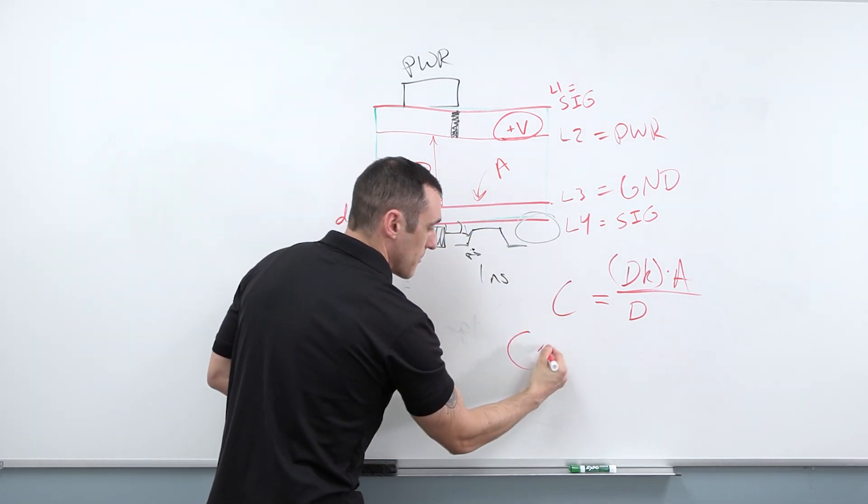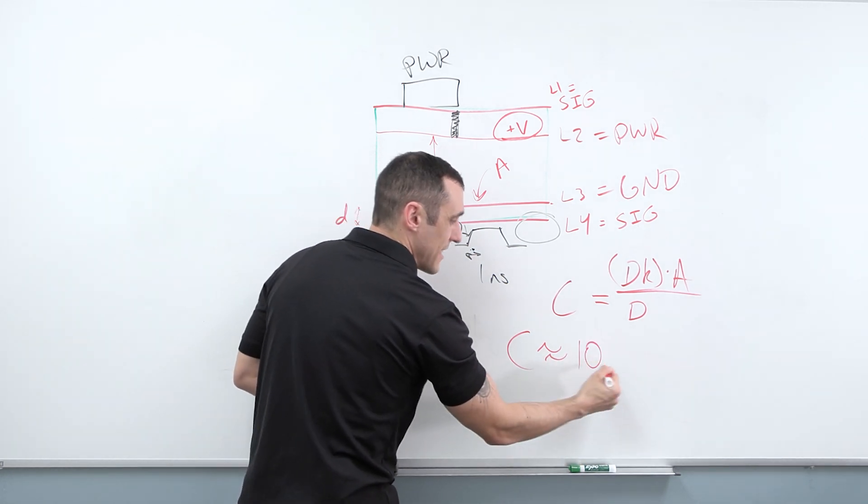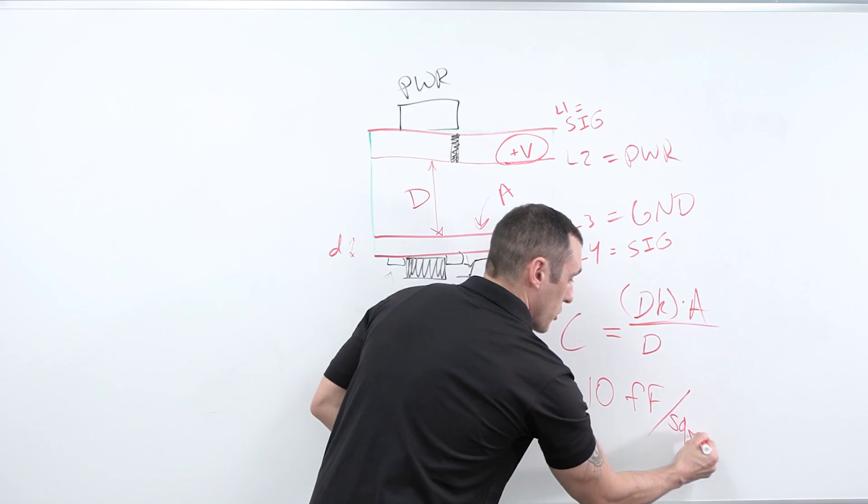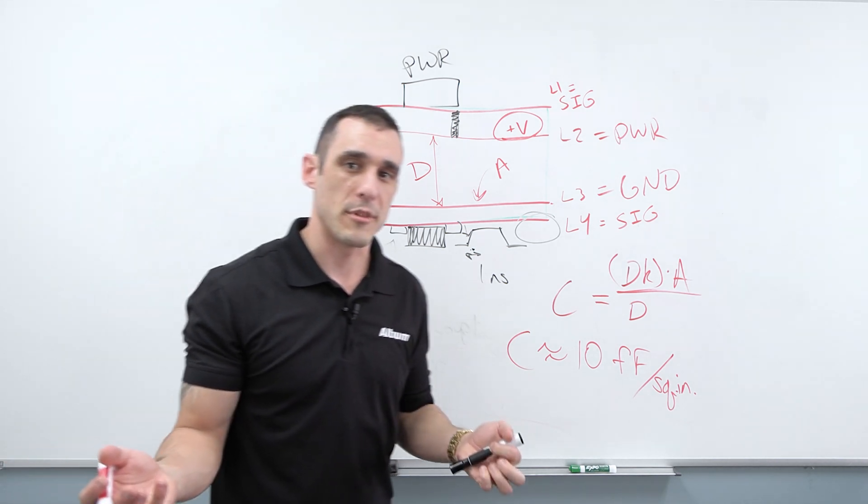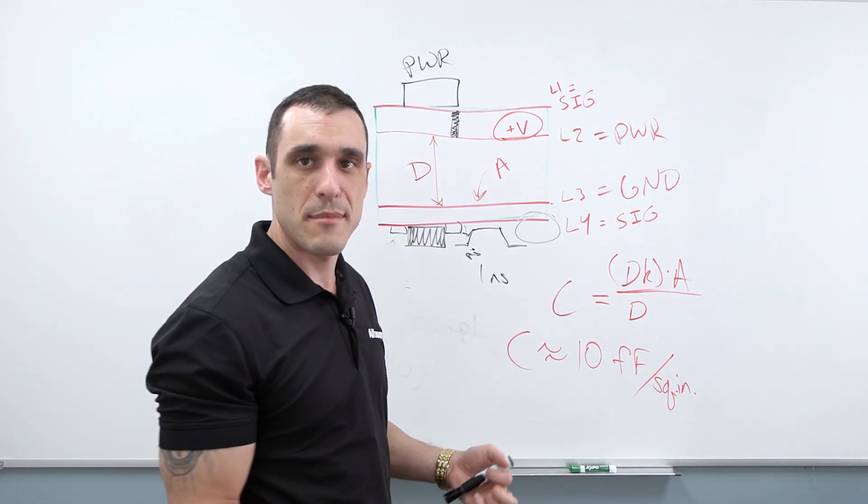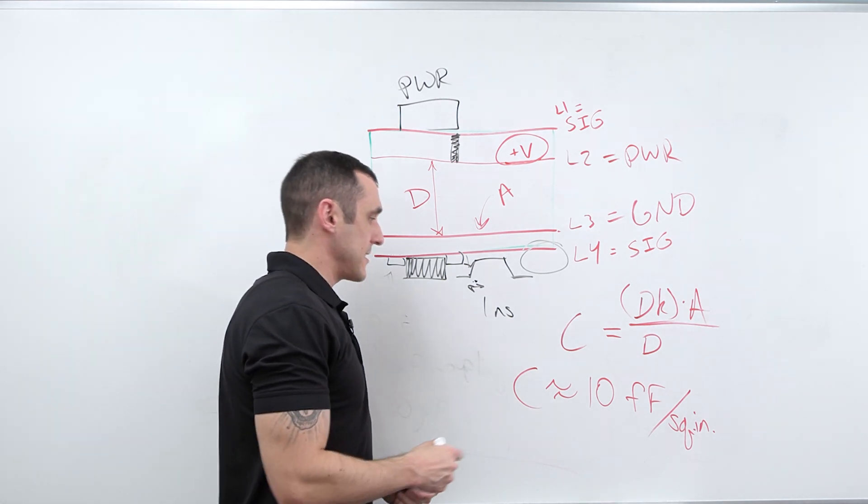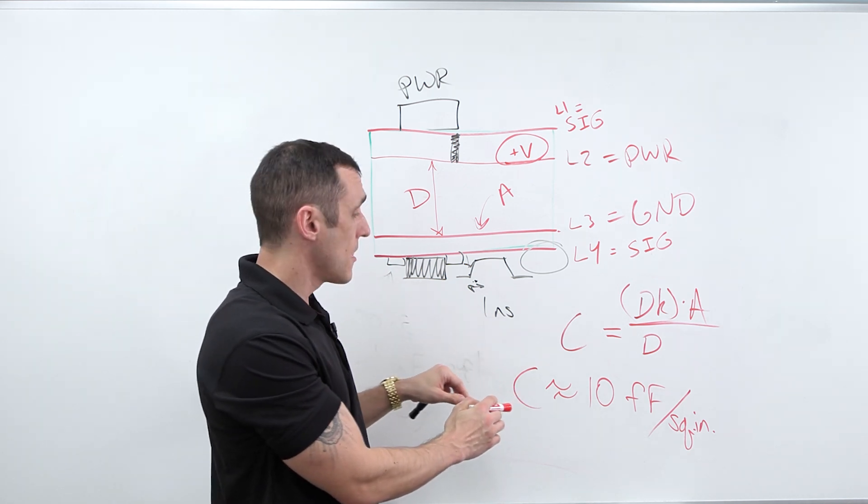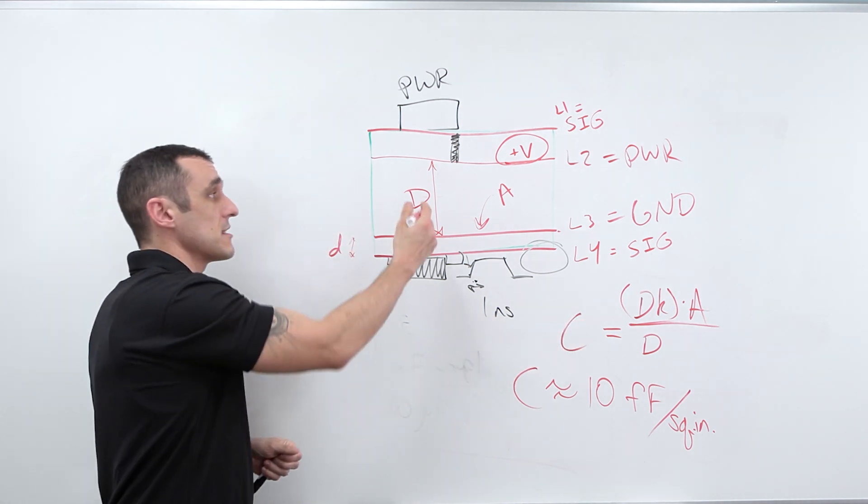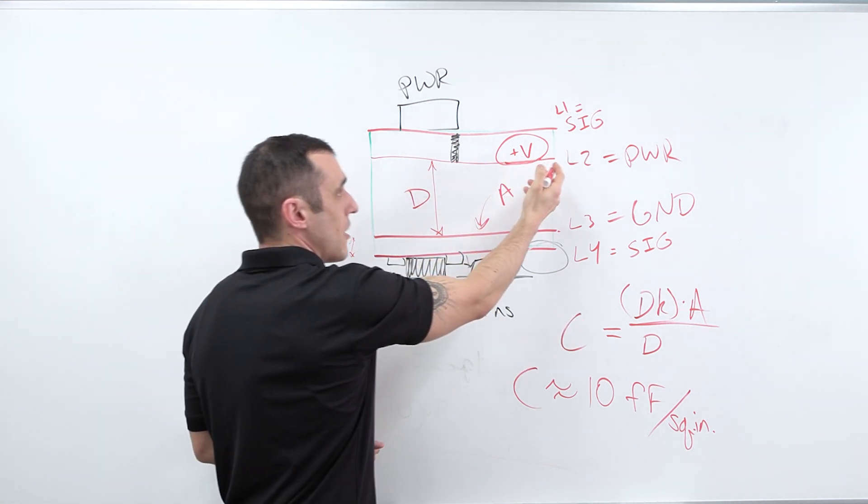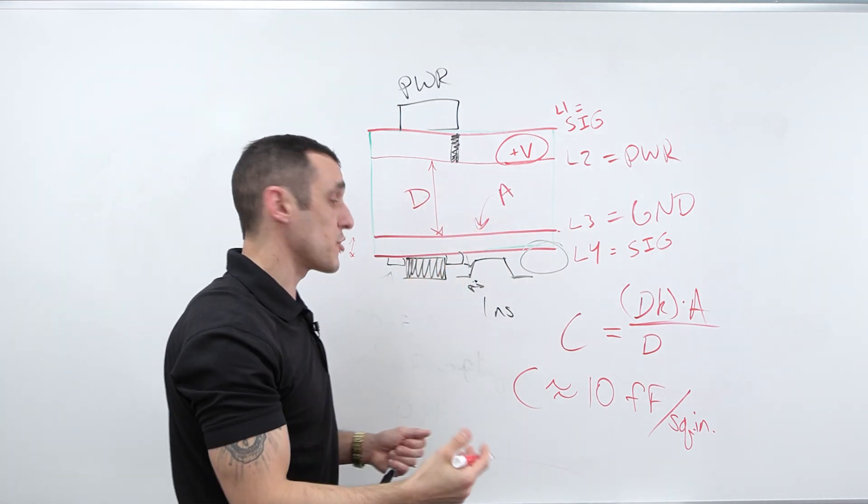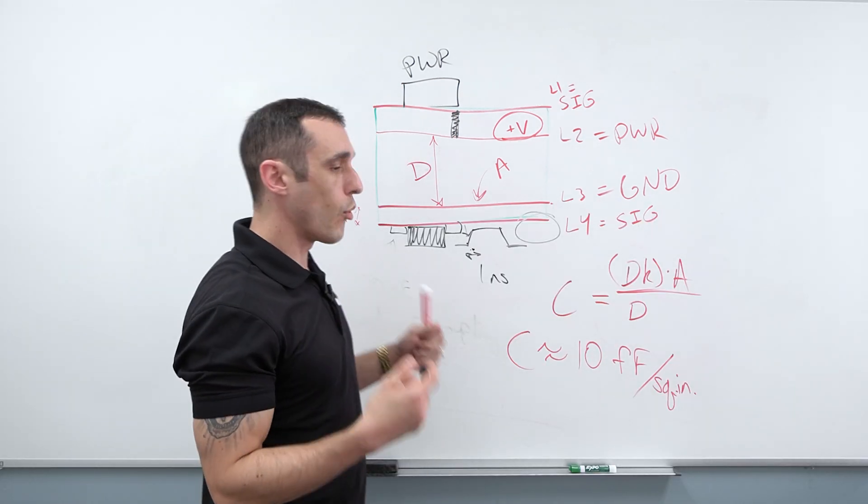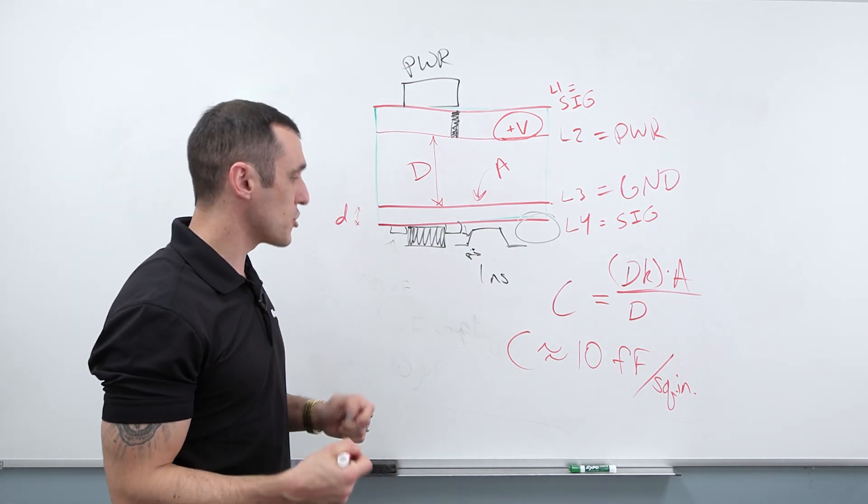If you actually crank out this calculation, what you'll actually find is that C is something on the order of like 10 femtofarads—not picofarads, not nanofarads, femtofarads—per square inch. So let's just take that in context for a moment. Is that a lot? Is that a little bit? What exactly does that mean? What this is telling you is that you actually get really low impedance from this capacitance at very high frequencies. So what this means is that this parallel arrangement of my power and my ground actually functions as a really good high-frequency capacitor. This is really nice for providing decoupling in boards that have high-bandwidth signals—maybe that don't need to pull a bunch of power, but that have very high-bandwidth signals.